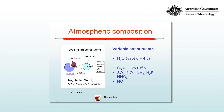Atmospheric composition. We're going to be considering the composition of the atmosphere as we observe it, and we can talk about two sets of constituents: the well-mixed constituents and the variable constituents. We're thinking about the troposphere in particular. In the troposphere, by volume, a little bit over 78% of the atmosphere is composed of nitrogen.